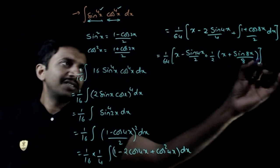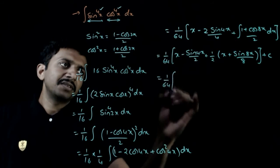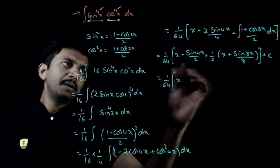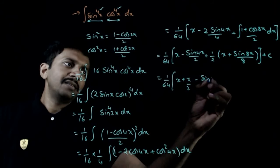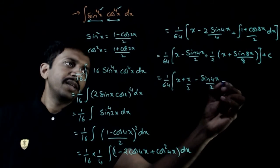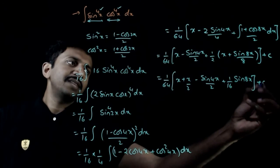So the integration is done. You just need to collect the terms and write it nicely. 1 by 64 times x plus x by 2 minus sin 4x by 2 plus 1 by 16 sin 8x plus c.